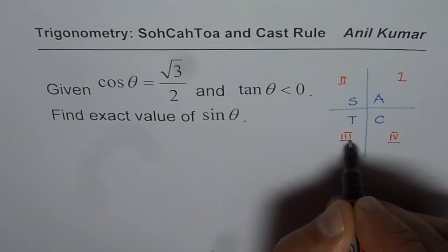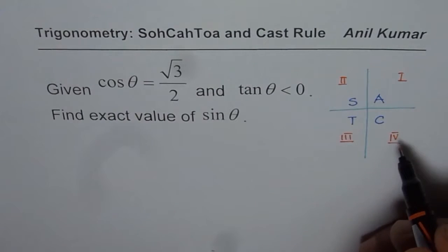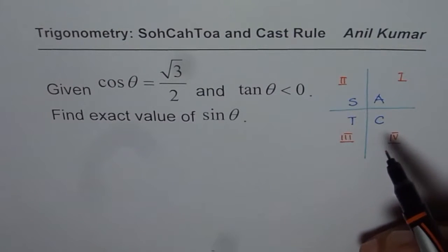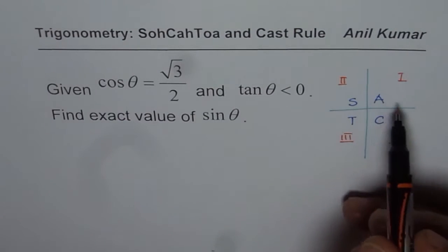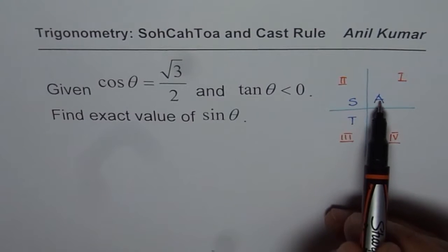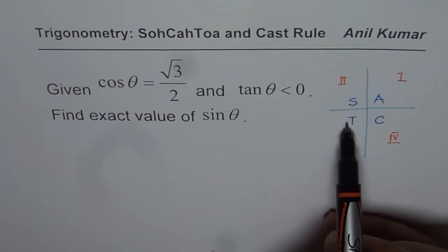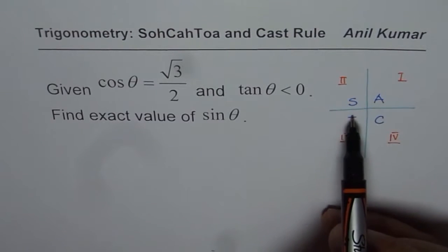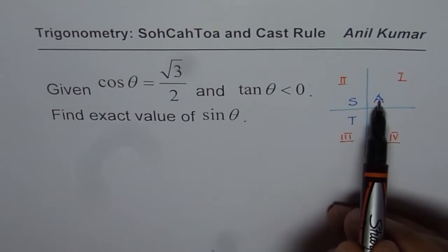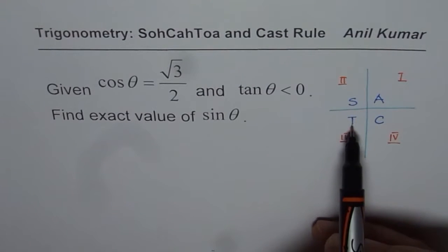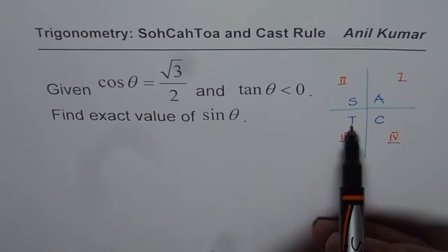It can be a bit confusing because we start from quadrant four. We also call this mnemonic 'All Silver Tea Cup', which helps you remember that all are positive in quadrant one, sine is positive in quadrant two, and tan is positive in quadrant three.